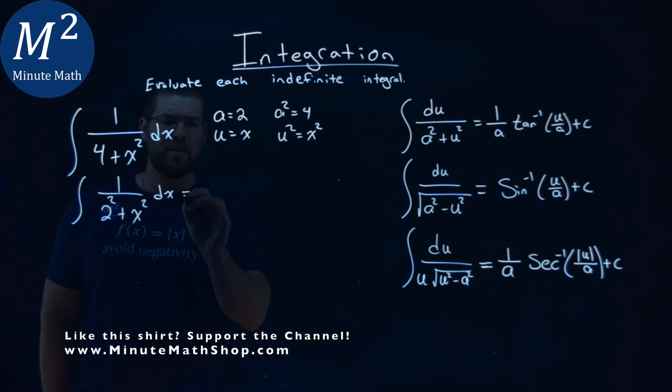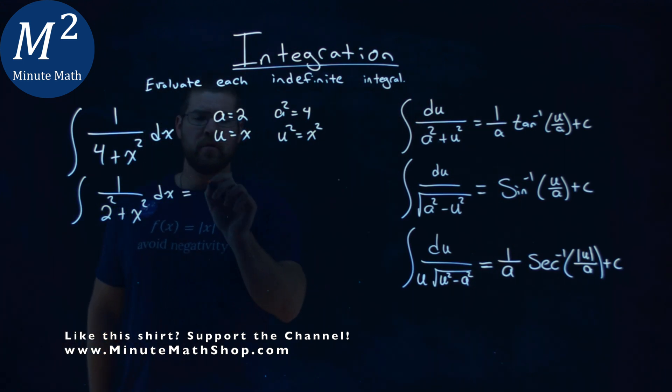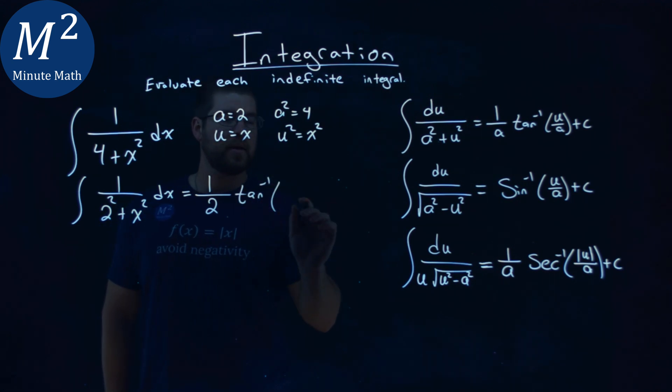So now let's go apply that. 1 over our a value, which is 2, so 1 half. The arctan here of, just plug and play here, our u value is x, and our a value was 2 here. And don't forget our plus c.